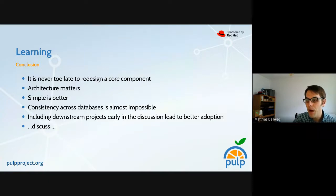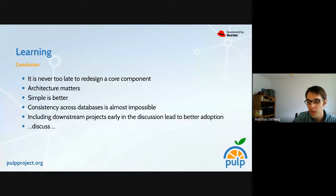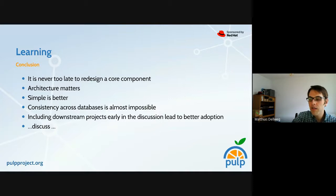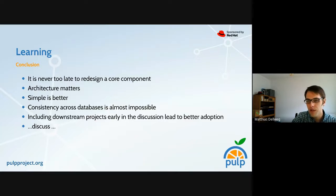We learned something on the way. It's never too late to redesign a core component of a software project. Architecture matters a lot — simpler, with fewer components, is usually better. What I personally learned is that keeping multiple databases consistent with the same data is almost impossible. One very nice thing we learned is that including downstream projects early in the discussion leads to better adoption of a feature. While still planning, we were already making calls with downstream projects, and I think that helped those projects adopt the new tasking system with less fear.